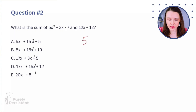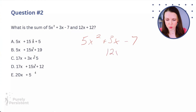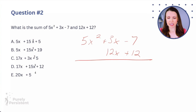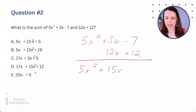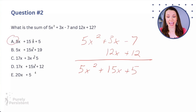Question two: what is the sum of 5x² + 3x - 7 and 12x + 12? This one is way easier than the one we just did. I'm going to combine like terms. I write 5x² + 3x - 7, then align 12x and +12 with the similar terms. Adding: 5x² stays as is, 3x + 12x = 15x, and -7 + 12 = +5. The answer is A: 5x² + 15x + 5.